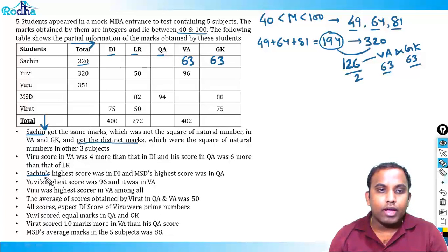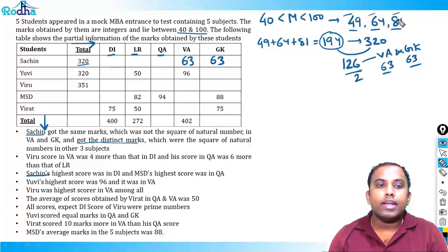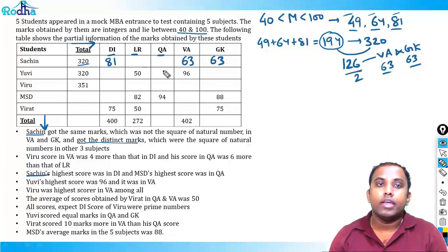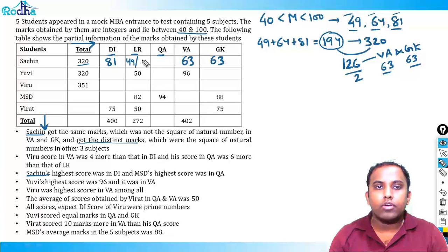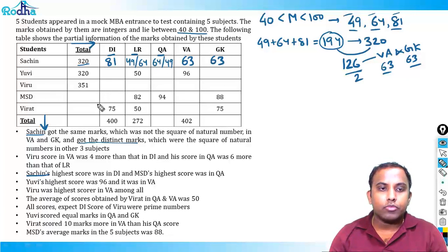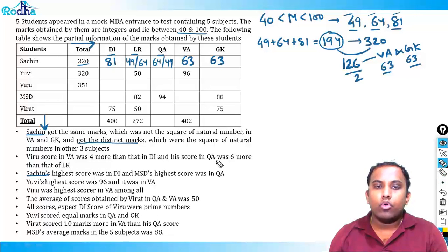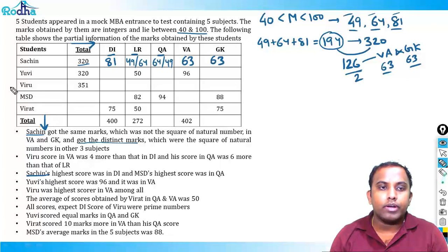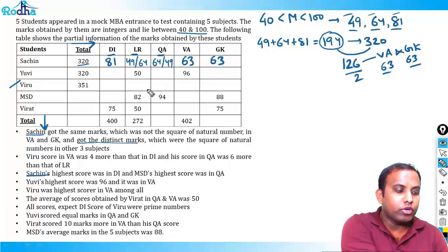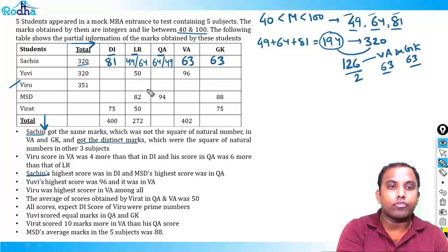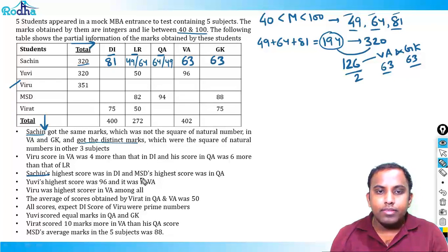Sachin's highest score was in DI, so among 49, 64, and 81, DI must be 81. LR and QA are 49 and 64 in some order — we'll determine that later. Next, Viru's score in VA was 4 more than DI, and his score in QA was 6 more than LR. We can't fill these yet without knowing Viru's scores.